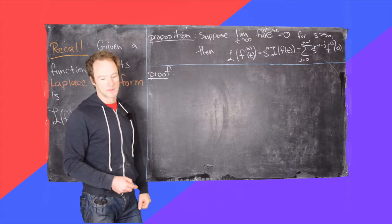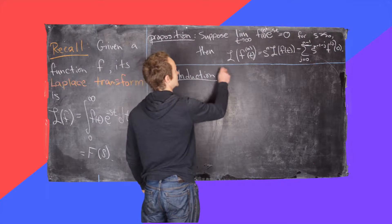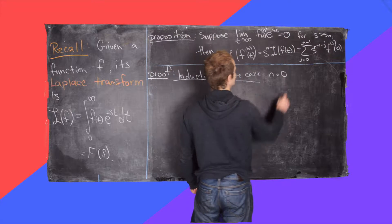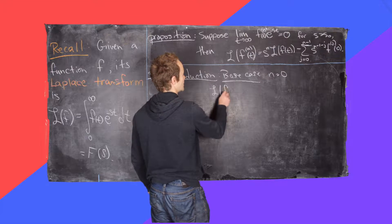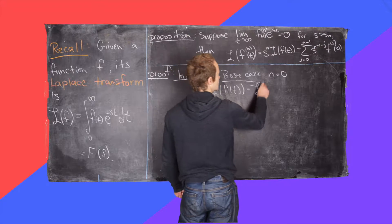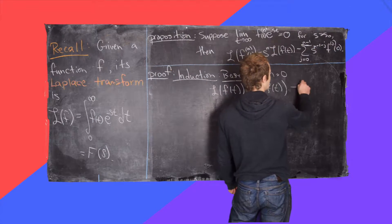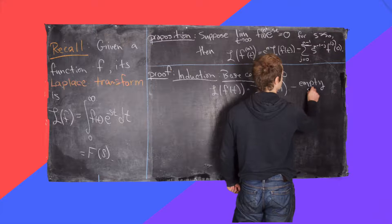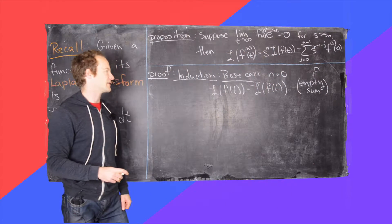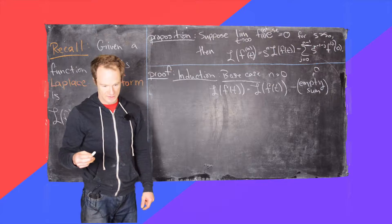We're going to prove this proposition by induction. The base case is when n equals 0. We get the Laplace transform of the 0th derivative of the function equals s to the 0 times the Laplace transform of the function minus an empty sum. An empty sum equals 0, so the base case is purely trivial — you just get something equal to itself and there's no work to do at all.